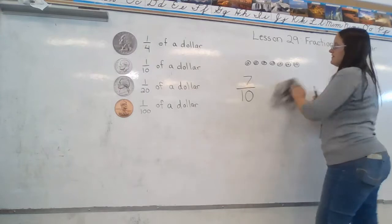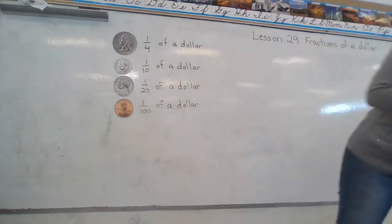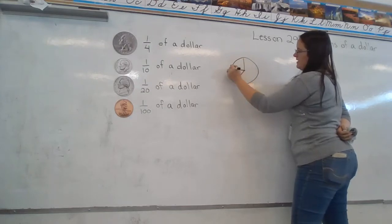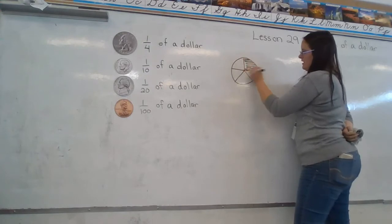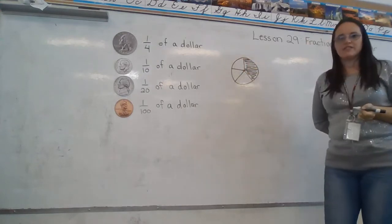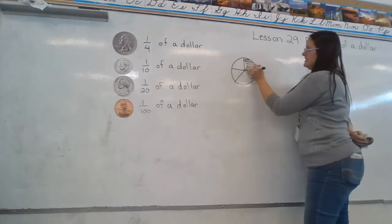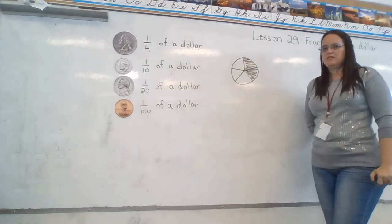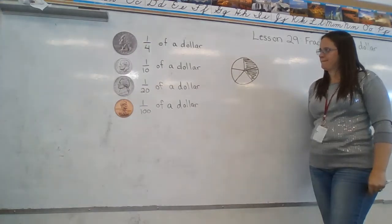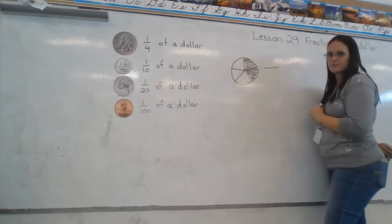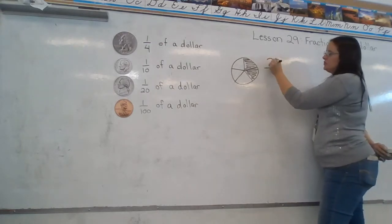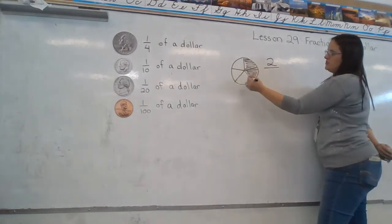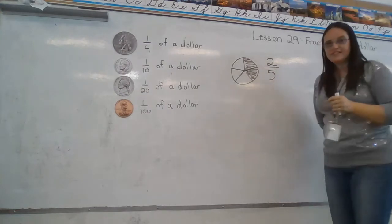That is the last of my examples. I do have a couple lesson practice problems that I would like for you to do. The first one is a circle and it says what fraction of the circle is shaded? It's split in two, and I have two pieces that are shaded there. Try it on your own before I give you the answer. I'll start my fraction with a fraction bar. How many pieces are colored in? Two. So two goes at the top. How many pieces does it take to make the whole? One, two, three, four, five. So two-fifths of this circle is shaded.